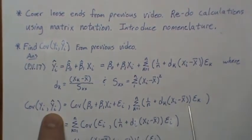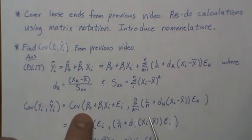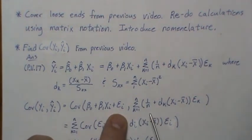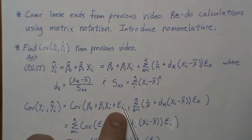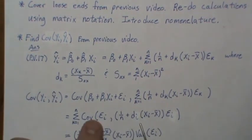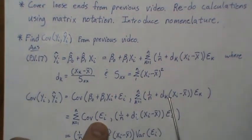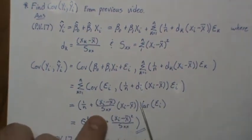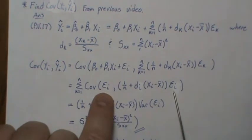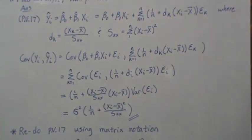For Cov(Yᵢ, Ŷᵢ), we plug in Y and the fitted line expression. Constant terms go away. Whenever the index is not i the covariance is zero, so only the i-th term survives. σ² comes out front and we get the result. That covers the covariance between Yᵢ and Ŷᵢ.